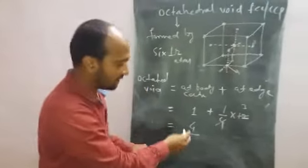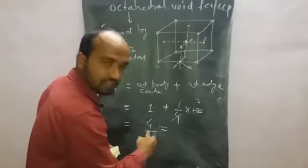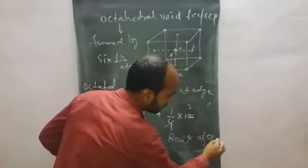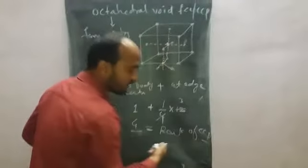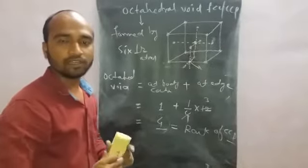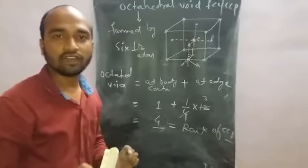Therefore in FCC or CCP, the total number of octahedral void is 4, which is the rank of CCP. So it is in tetrahedral and octahedral void.